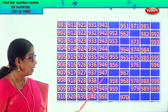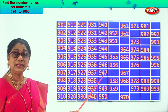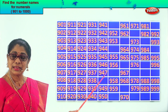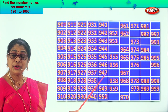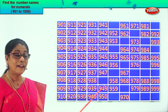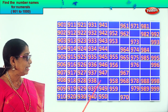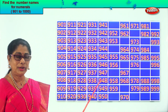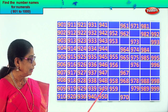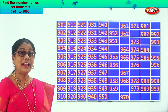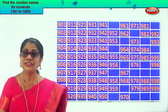946, 947. After 47 comes 48, so the next missing number is 948. 949, 950.